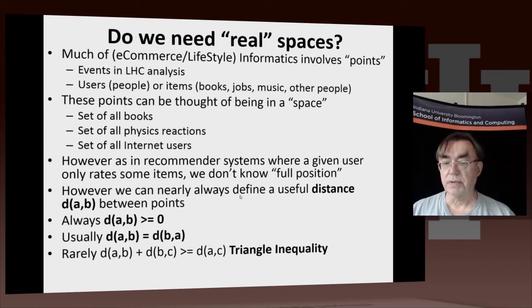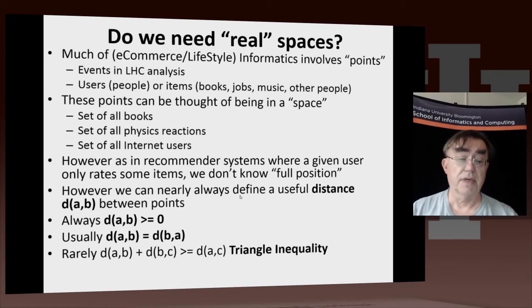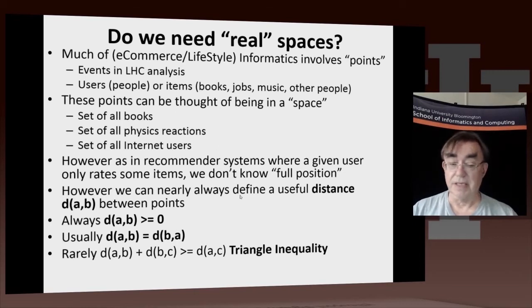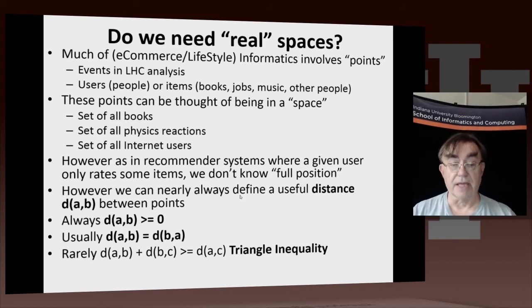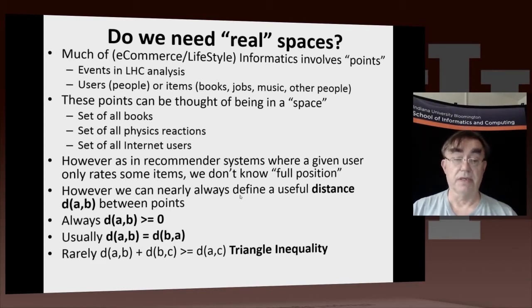If we look at distance between points, there are two properties which are nearly always true and are useful. First, distance is always zero or positive. And the other is that the distance between a and b is the same as the distance between b and a. If they're not, you'd take the average of your naive estimate and call that the distance, which gives you this symmetry property. There's another property called the triangle inequality, which is rarely true in these obscure spaces that aren't really vector spaces.